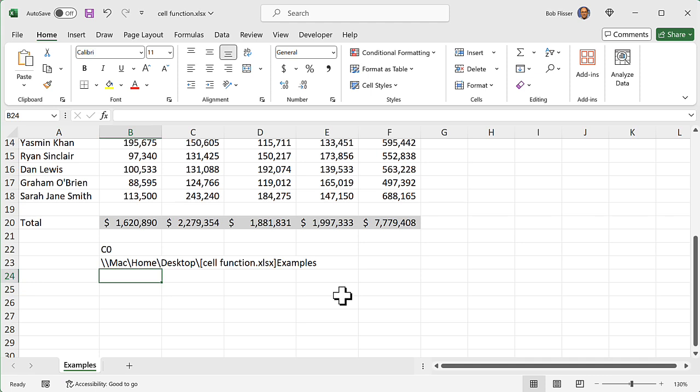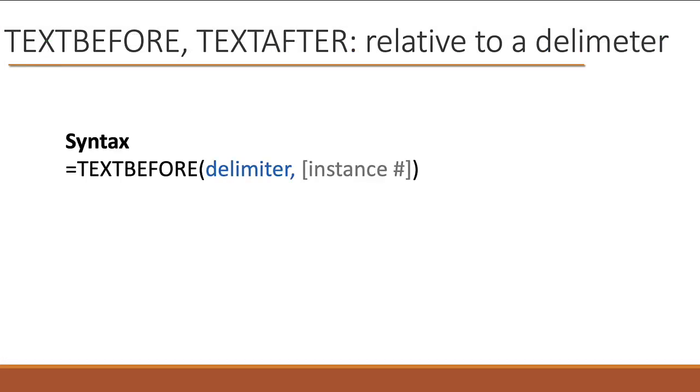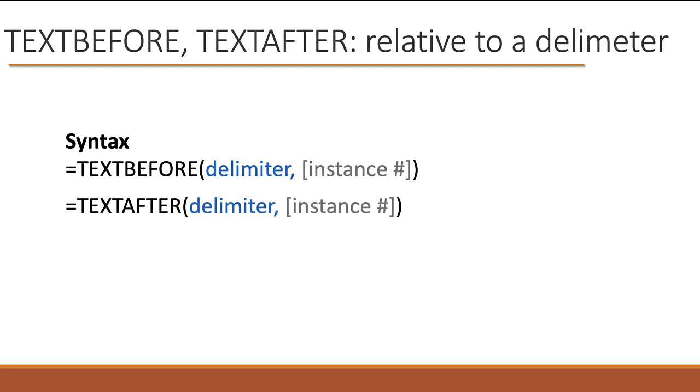Now what if I just want the file name and not the path or the worksheet name? Here's where I'll show you an example of using the CELL function along with other functions — actually, a couple of functions. I'm going to use the TEXTBEFORE and TEXTAFTER functions to grab just the file name and remove everything else. The syntax of TEXTBEFORE and TEXTAFTER is: either function takes two arguments — one required: what's the delimiter, and the second: what is the instance number. I'm going to do this in two steps so you can better see how it works.